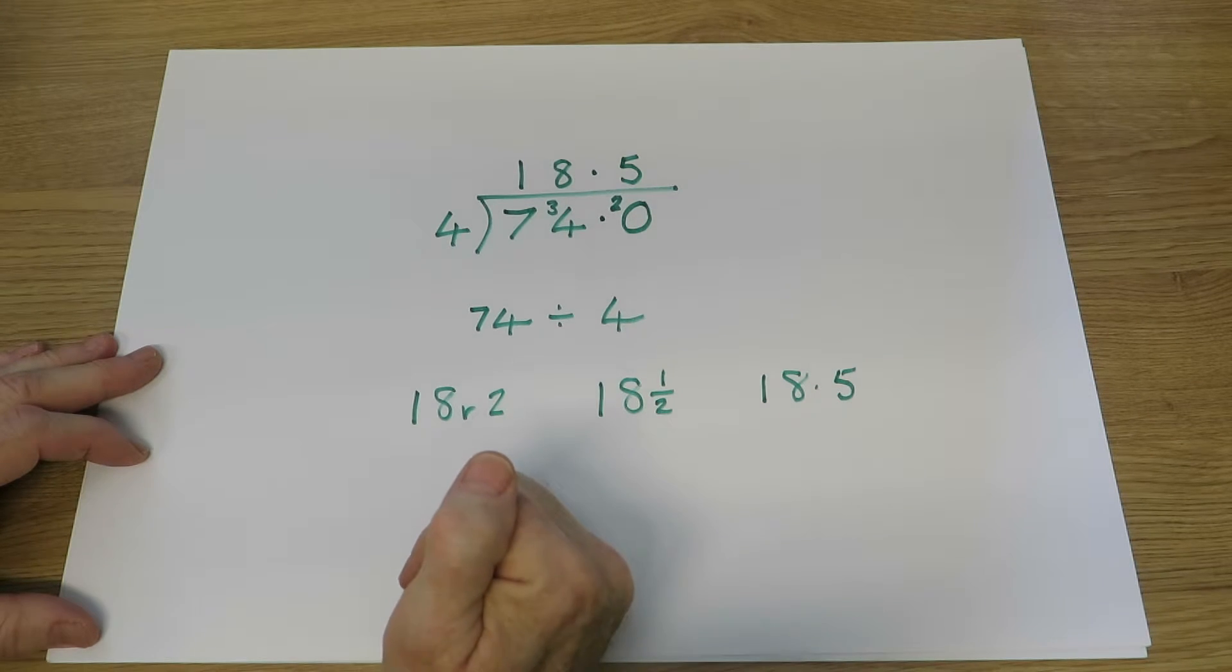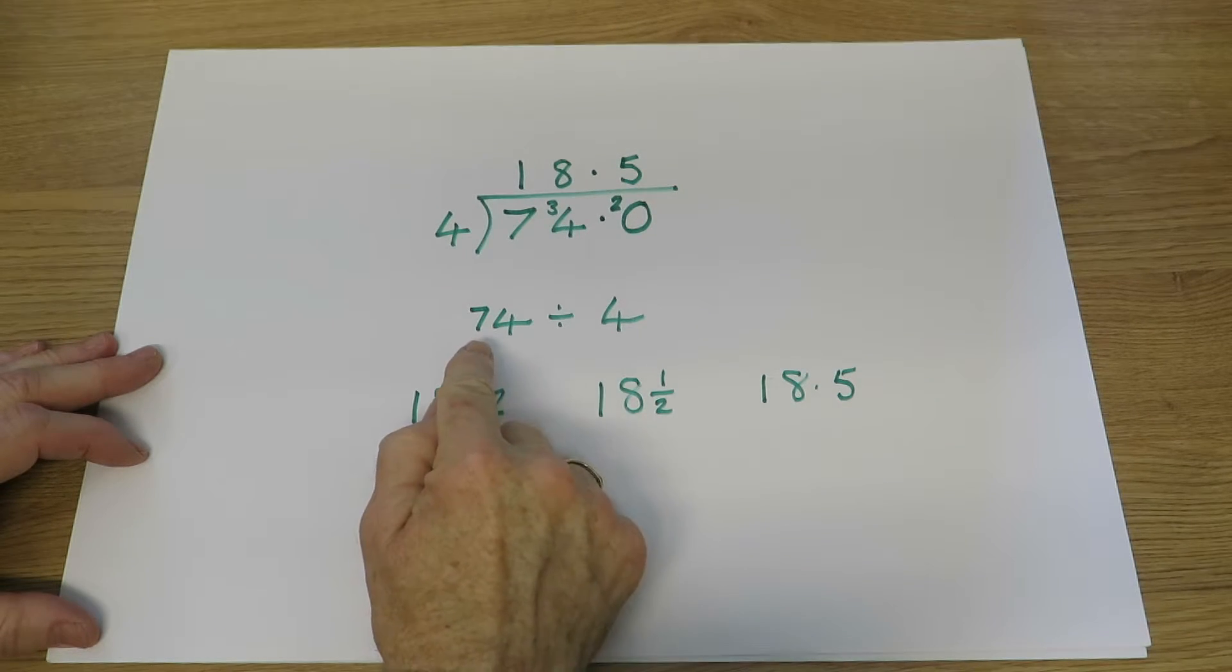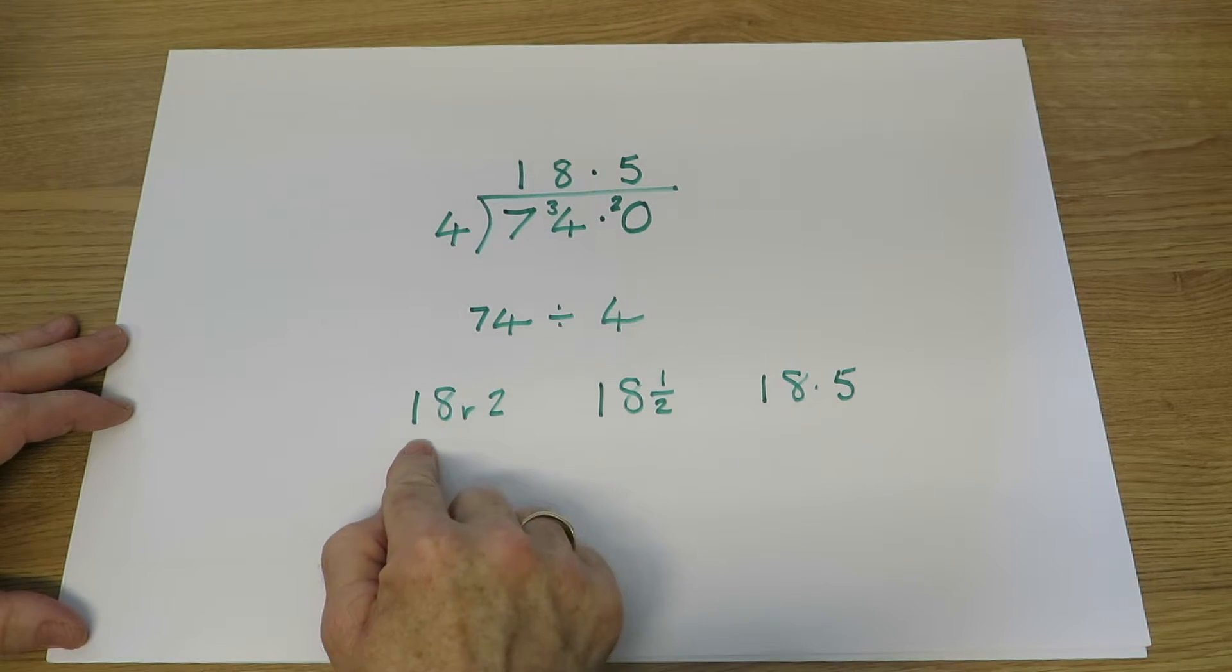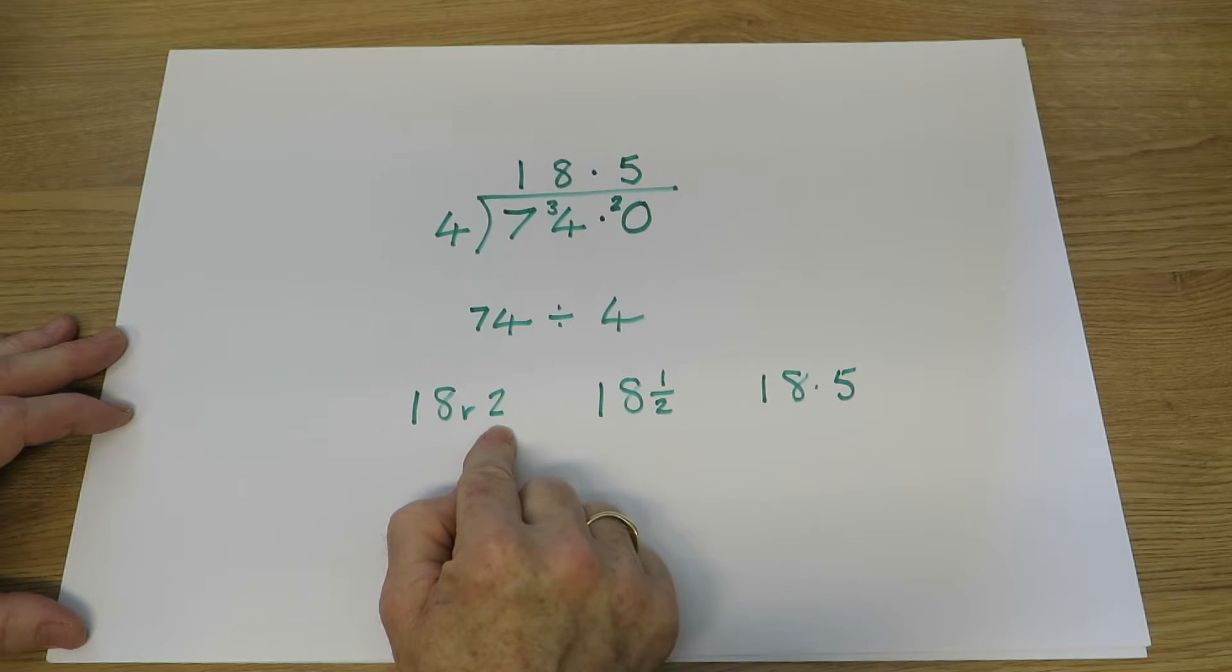So for example, if the problem was there are 74 children going on four minibuses, how many children will fit on each bus? Well, we could say there'll be 18 children on each bus, but there'll be two children left over.